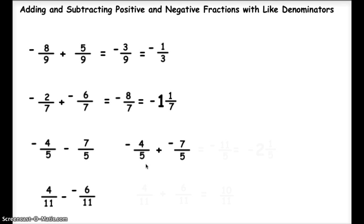Now I ask myself if they work together or against each other. And they work together, so I add them and I keep it negative. So I get negative 11 fifths. 5 goes into 11 two times, with 1 remaining fifth. So the answer to this problem is negative 2 and 1 fifth.